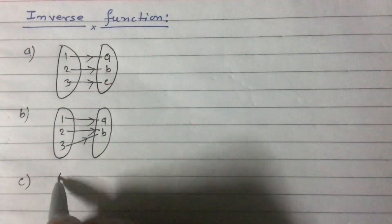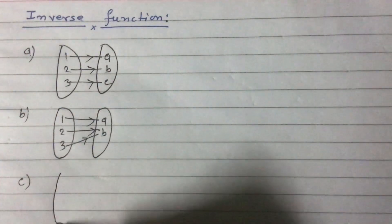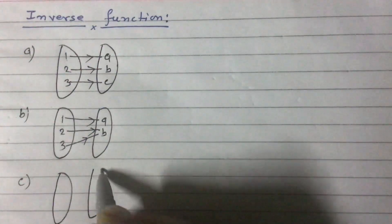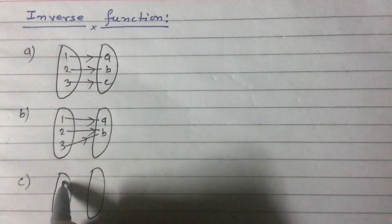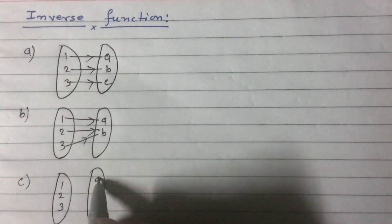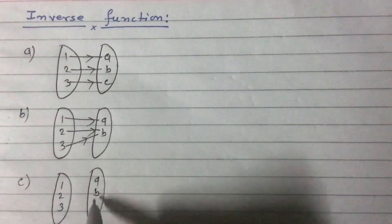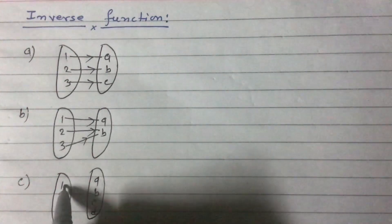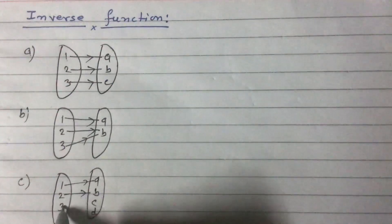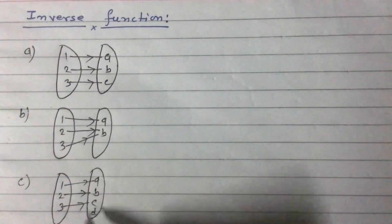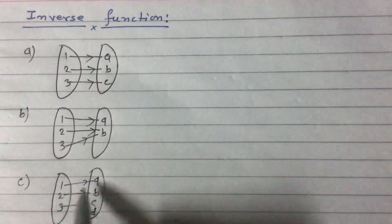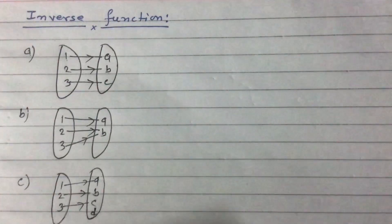The third type is like this: we have {1, 2, 3} mapped to {A, B, C, D}, where 1 maps to A, 2 maps to B, and 3 maps to C. D is an extra element, so this is a one-to-one into function.